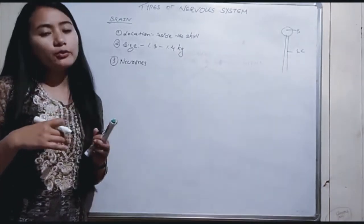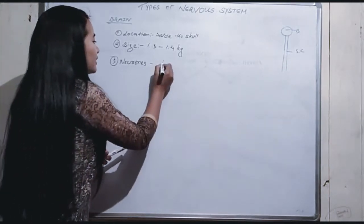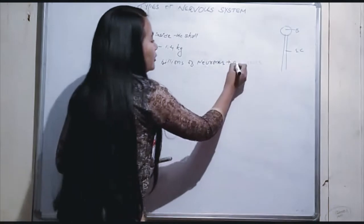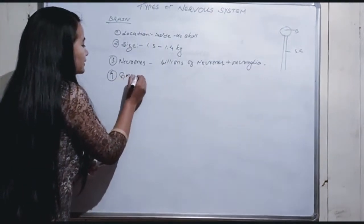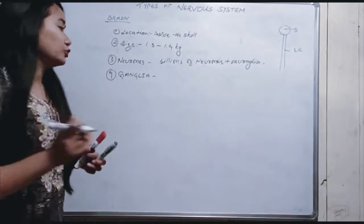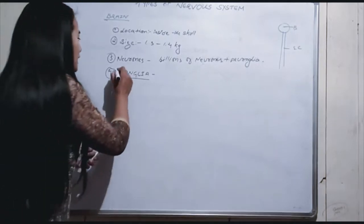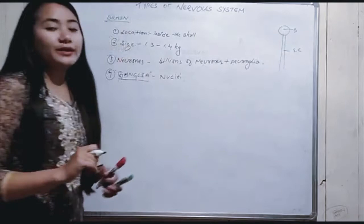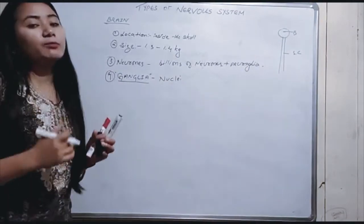Neuroglia protect the neurons. Inside the brain, clusters of cell bodies are called nuclei, while outside the brain they are called ganglia. So: inside the brain — nuclei; outside the brain — ganglia.